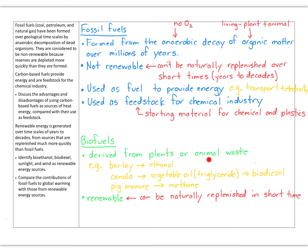Biofuels are derived from plants or animal waste. For example, barley can be used to make ethanol — basically a variation on making beer. Canola is high in vegetable oil, which is a triglyceride, and can be turned into biodiesel. Manure from pigs can also be used to produce methane; as it decomposes it releases methane gas, which can be captured and added to natural gas for cooking, transport, or power stations.